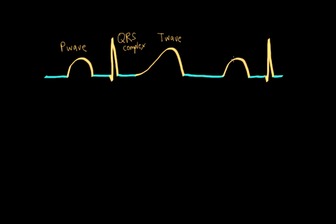The PR segment is from the end of the P wave to the beginning of the QRS complex. Remember, the beginning of the QRS complex, not the R wave. And it represents the spread of depolarization through the AV node, bundle of hiss, and bundle branches until we reach the interventricular septum.